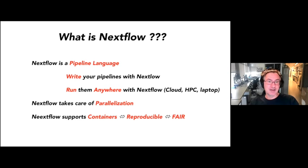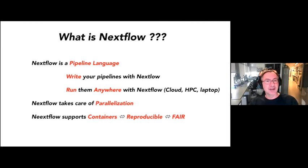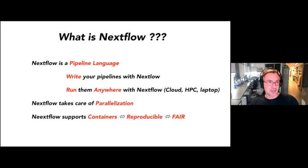FAIR is a contribution towards computational reproducibility. It's the idea that any in silico object has to be findable — you need something like Google to find it — it has to be accessible, so you don't get a 404 when you click the link. It has to be interoperable, all of these things have to be pluggable into one another, and it has to be reproducible. That's where Nextflow is making a contribution.